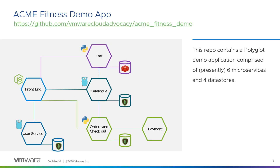In this demo, we use an application called Acme Fitness Demo. This open-source VMware-developed application is a full microservices distributed polyglot application. That means that every function in the application is a microservice and every microservice is written in a different programming language — some in Python, some in Go, some in JavaScript. This application also has different data stores for the different services like Mongo and Redis, and many of our customers and employees use those applications to test out microservices platforms.